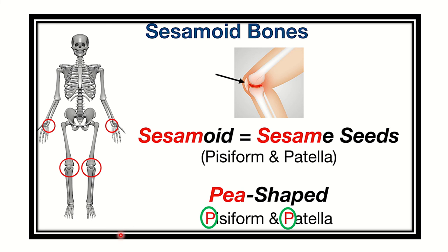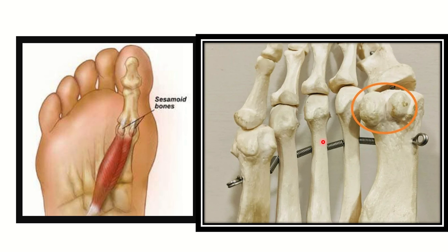We can see different groups of sesamoid bones - the pisiform and patella are also sesamoid bones. Sesamoid bones are a type of bone which are not well represented at birth, but after birth, due to friction from different parts of the body, they develop.